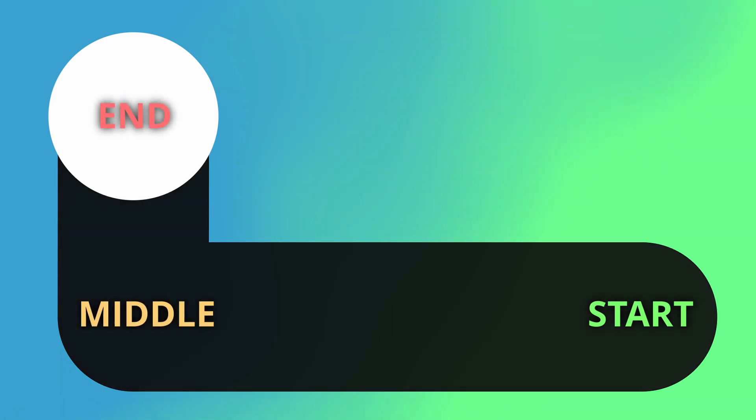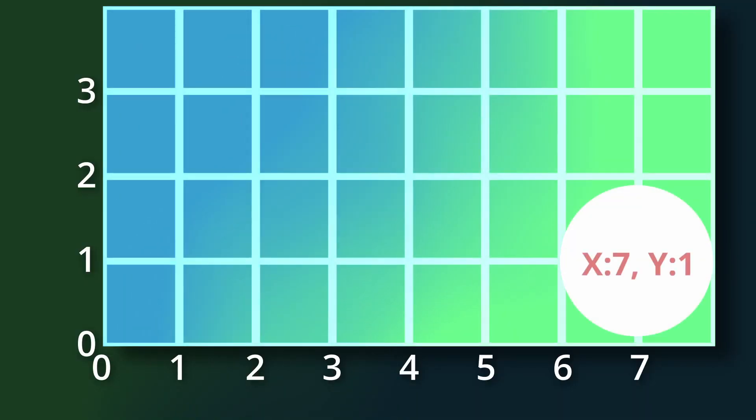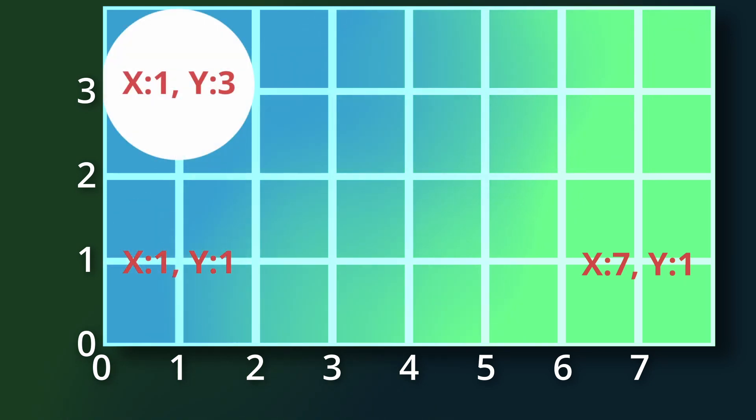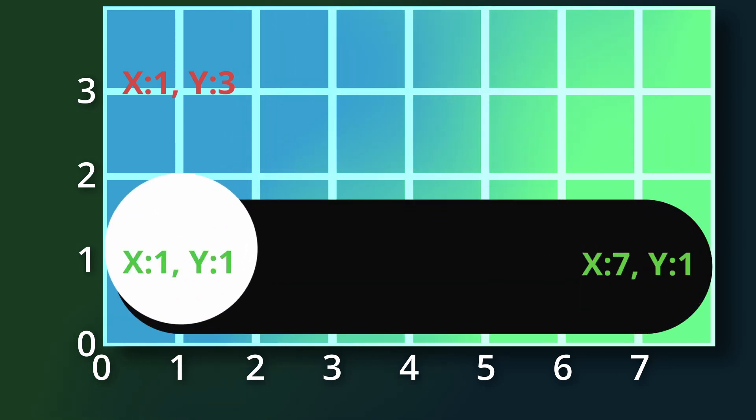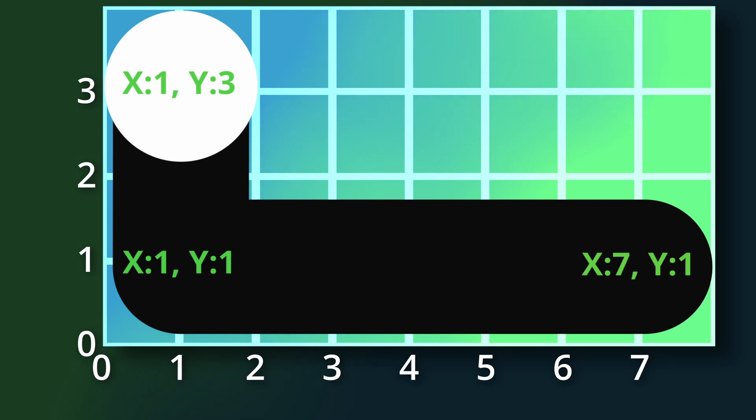If I move this circle from the right to the left, I create two points: a start and an end point. If I move it right to left and then up, I have three points — a start, a middle, and an end — and these three points are the same as keyframes. Each keyframe holds the value of the position of that circle, so the start point holds the X and Y position, as does the middle and the end. The computer then animates the movement between those keyframes at a speed depending on how far apart they are.